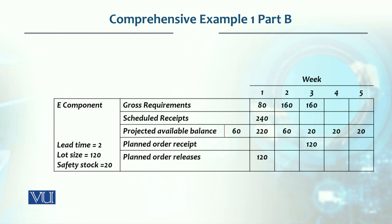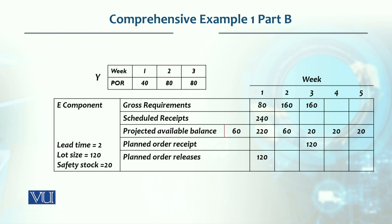Finally, component E — this is also used in Y assembly, similar to D. E also requires two units per Y. So gross requirements mirror D: 80 units needed in week one (for 40 Y units), 160 in week two, and 160 in week three.